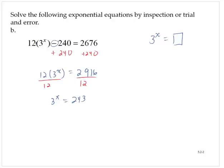And now go through your powers of 3. Let's see, 3 to the third is 27, 3 to the fourth is 81, 3 to the fifth is 243. And so then x is equal to 5.